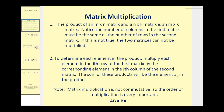Number one: the product of an m by n matrix and an n by k matrix is an m by k matrix. Notice the number of columns in the first matrix must be the same as the number of rows in the second matrix. If this is not true, the two matrices cannot be multiplied.